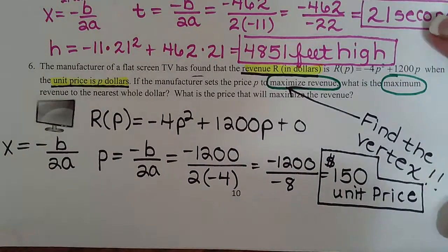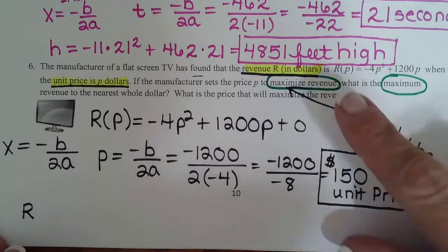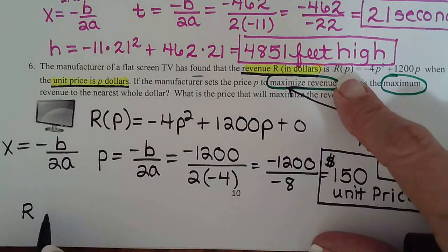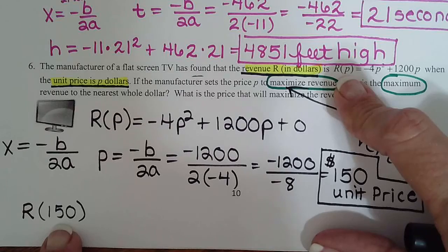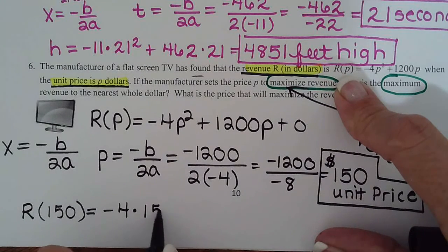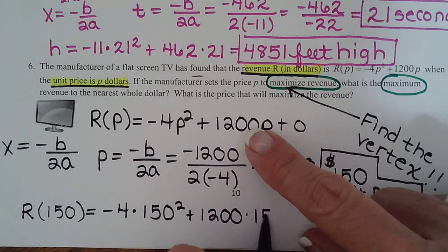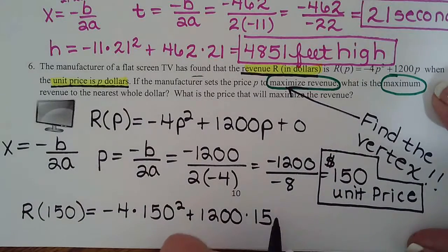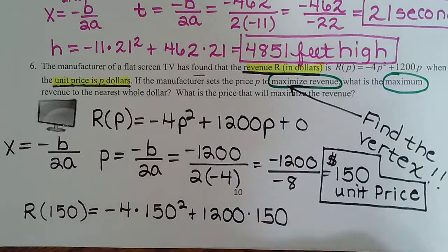Okay, so to find the maximum revenue, we take our original equation and everywhere we see a p, we plug in 150. So R of 150, that means the revenue when the item is priced at 150, is negative 4 times 150 squared plus 1200 times 150. So everywhere I saw p, I replaced it with 150. Yes, good thing I went and looked back at that: plus 1200 times 150. There we go, now we're ready for the calculator.